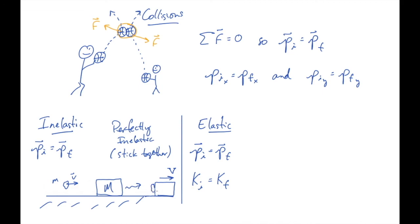After this collision, we had this combined thing going at some final velocity capital V, with this wad of putty stuck to it — both moving together at that common final velocity. That's what's meant by a perfectly inelastic collision. All right, we'll move into some examples now.